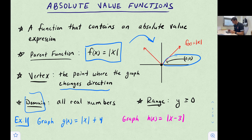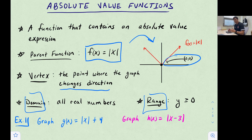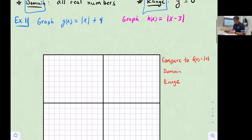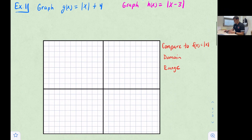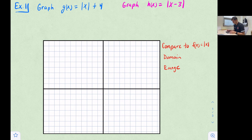The range of the parent function is y ≥ 0 because the graph only goes up. However, transformations can change the range — a reflection or a vertical translation down would adjust it. We're going to look at two examples: the first covers translations, and the second covers stretches, shrinks, and a reflection.